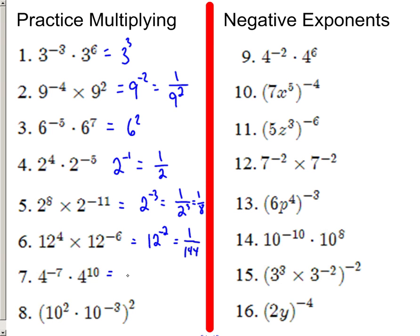I'm just trying to get you the basic idea of it. This would be 4 to the third — it's positive already. And then number 8: everything's got to be distributed, so that would be 10 to the fourth times 10 to the negative sixth. 4 plus negative 6 is negative 2, so it would be 10 to the negative second power.